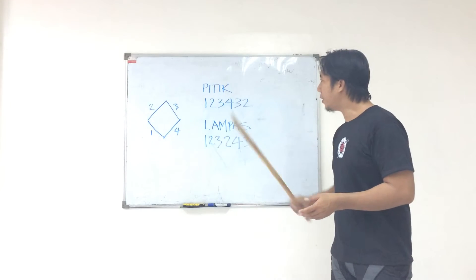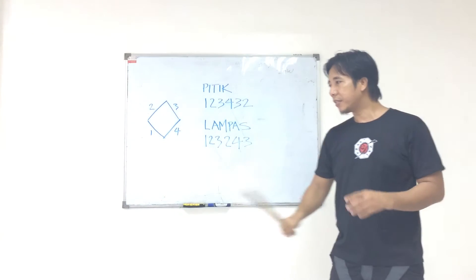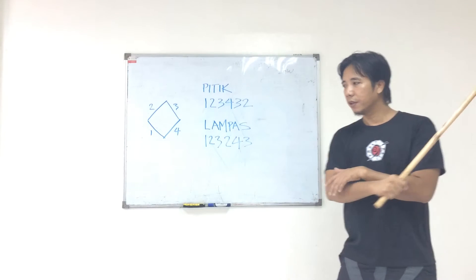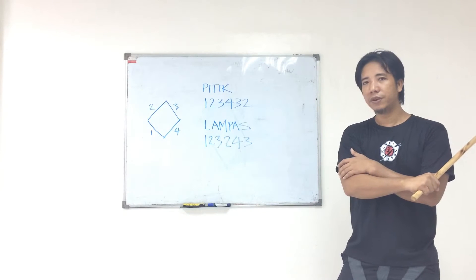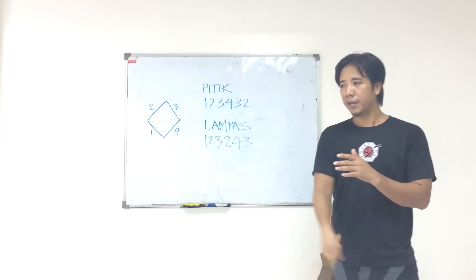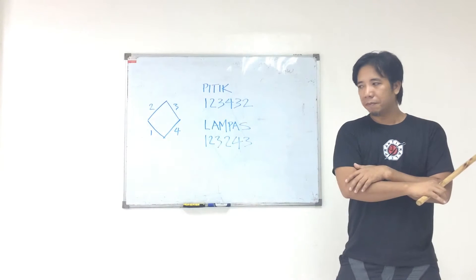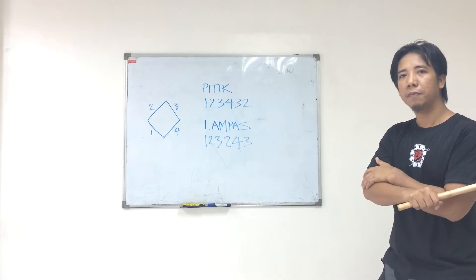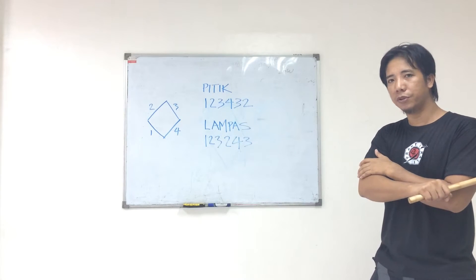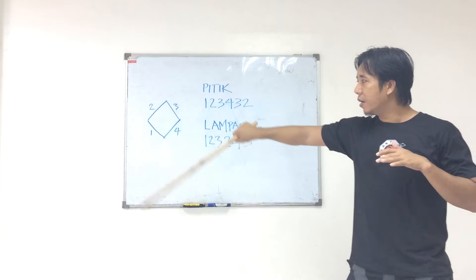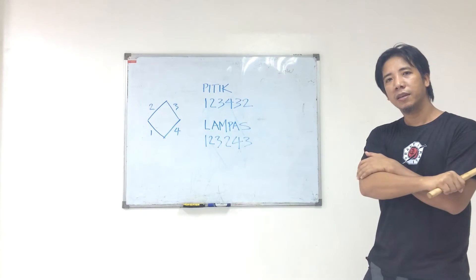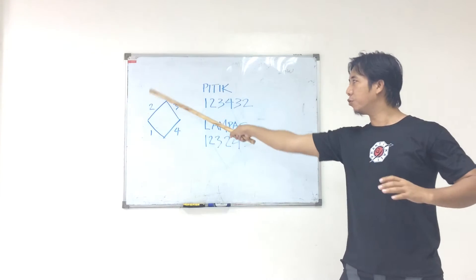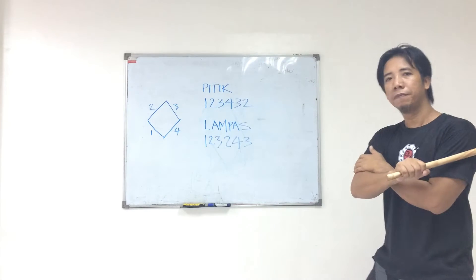With the pitik strike, you strike a target and then retract — strike a target and then retract. You don't go full swing; it's just a snapping motion. So if I do number one, it goes back to the original position. Same thing when I do a different angle or different target — number two goes back.